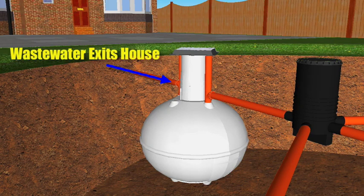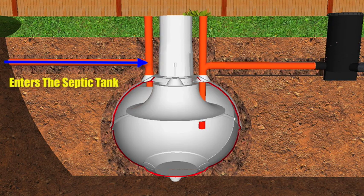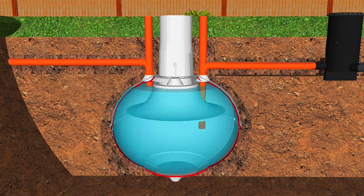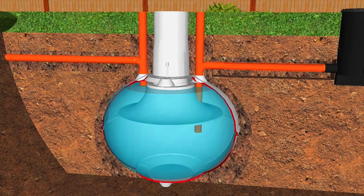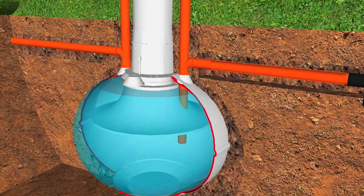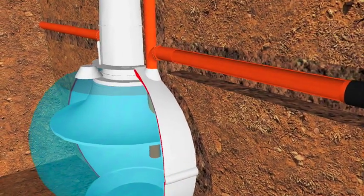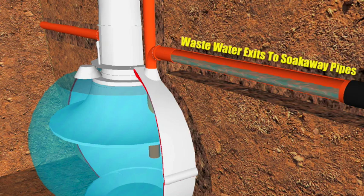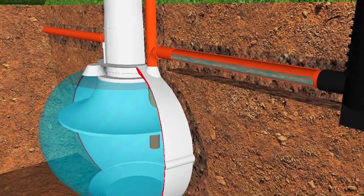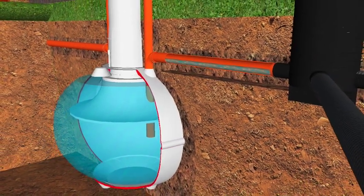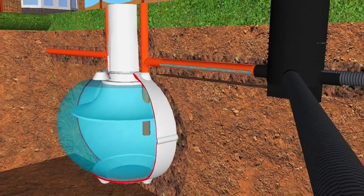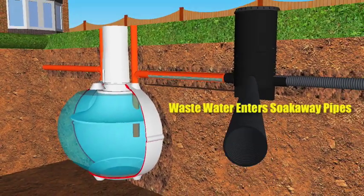The wastewater leaves the house and then enters into the septic tank. From there, the wastewater makes its way up through the outlet pipe of the septic tank and then towards the pipes that lead to the soak away. From there, the wastewater makes its way down into the soak away pipes and then drains naturally into the soil.